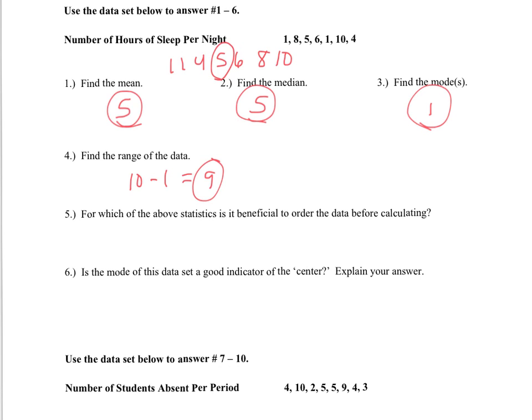So after ordering the data, we can find that the middle number is 5, that mode is 1 because that value occurs the most, and after calculating the average, we have a 5. The range is 9. Now question 5 says, for which of these statistics is it beneficial to order the data? And the data needs to be ordered to find the median or the number that's in the middle.